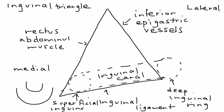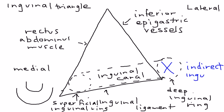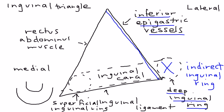The importance of this diagram is to understand the difference between direct and indirect hernias. An indirect inguinal hernia protrudes through the deep inguinal ring and, importantly, it is lateral to the inferior epigastric vessels. A direct inguinal hernia protrudes through the abdominal wall and is medial to the inferior epigastric vessels.